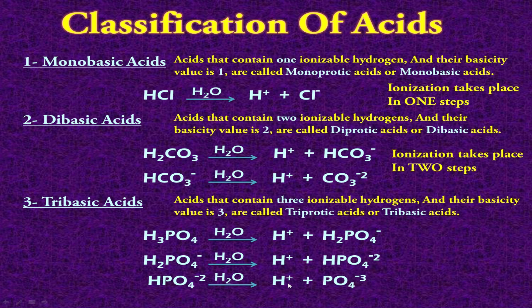So in 3 steps, each of the 3 hydrogen atoms is removed as a hydrogen ion. The ionization of such acids takes place in 3 steps, and therefore they are called tribasic acids or triprotic acids.